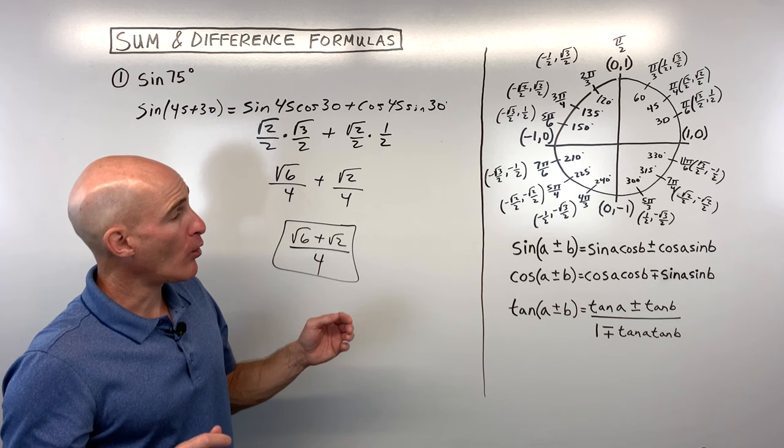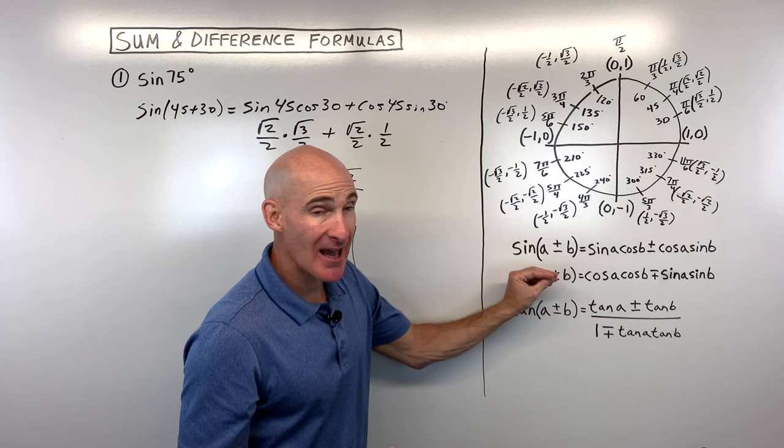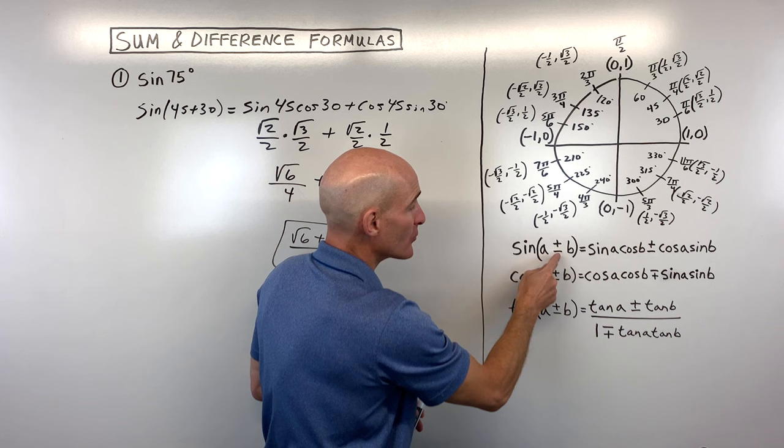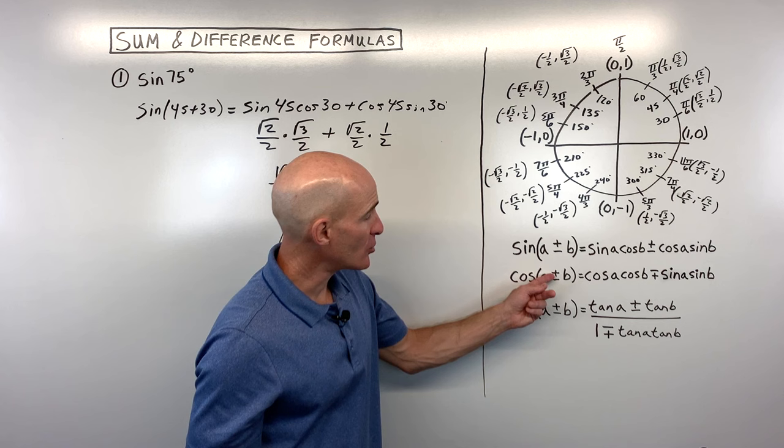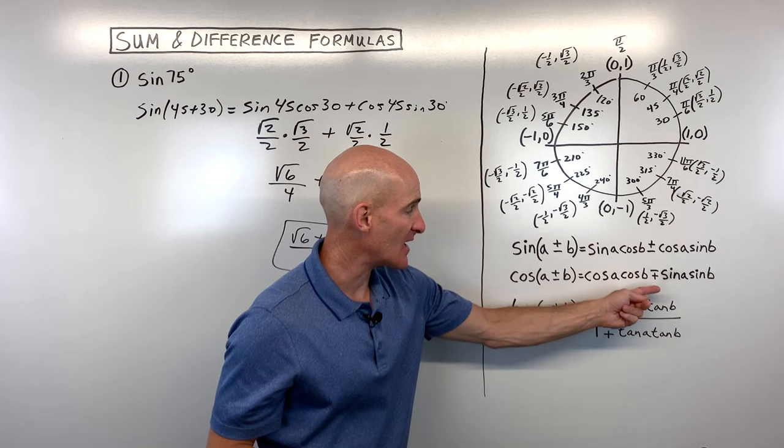One quick pointer: notice how I've condensed these formulas. For the sine sum formula, when you're adding two angles, you add on the right side; when you're subtracting, you subtract — sine is the same. But for cosine, it's the opposite: when you're adding, you actually subtract on the right side, and when you're subtracting with cosine, you add on the right side. So it's the opposite for cosine.